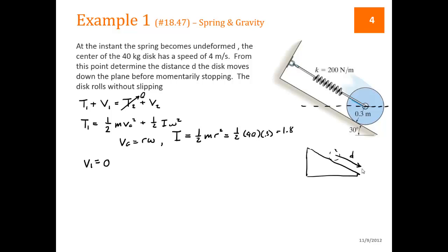In going down the hill distance d, it's also going to go down vertically a distance h. And we can relate d to h by saying that h is equal to d times sine of this angle here, which is 30.